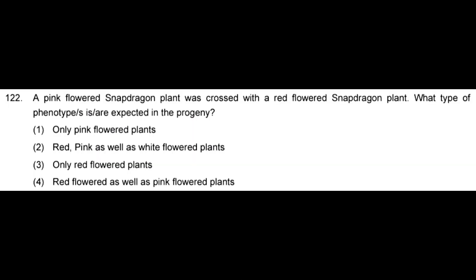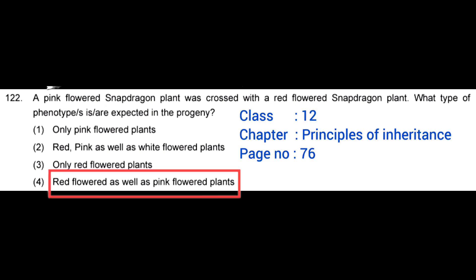A pink flower snapdragon plant was crossed with a red flower snapdragon plant. What type of phenotype is or are expected in the progeny? Correct answer: option 4, red flower as well as pink flower plants.